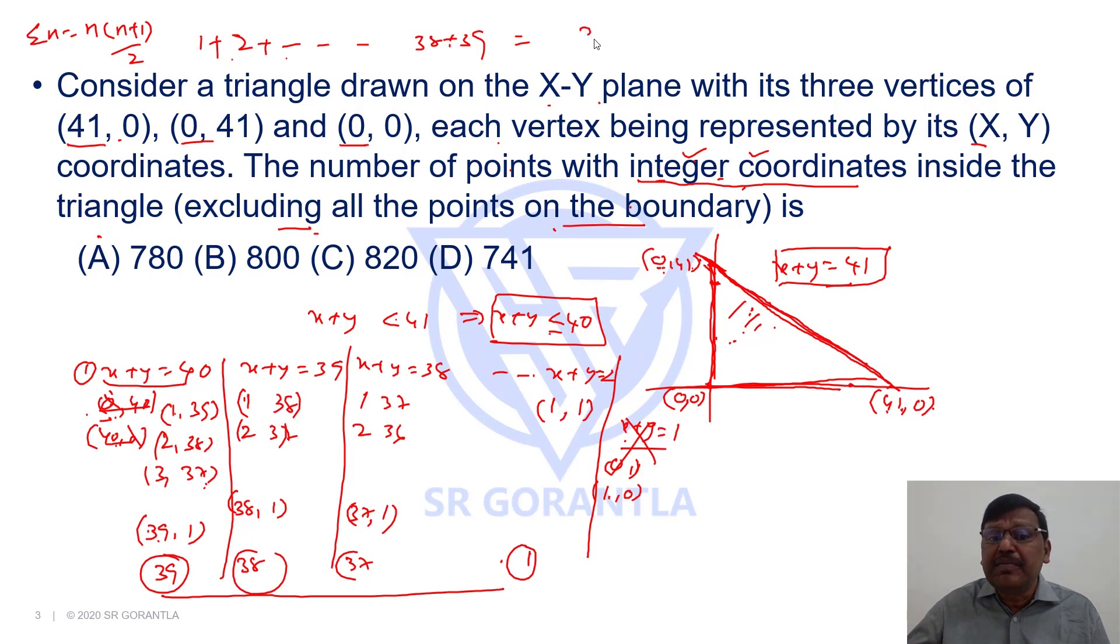Sum of first 39 numbers is 39 × 40 / 2 = 780. 780 coordinates are possible. How many integer coordinates are possible? 780. Our answer is choice A. Thank you.